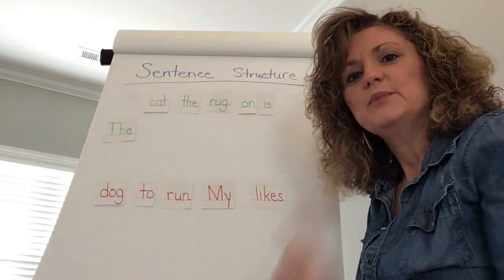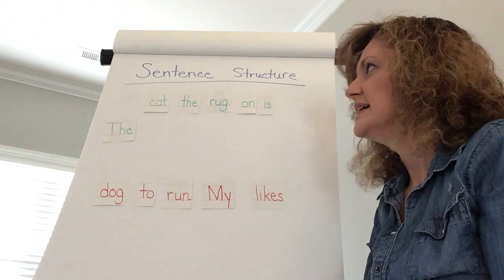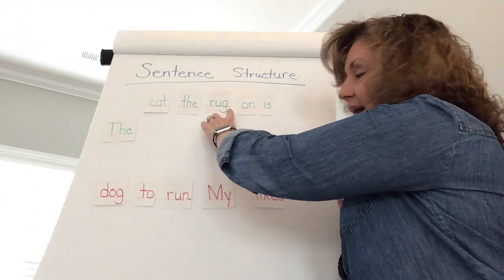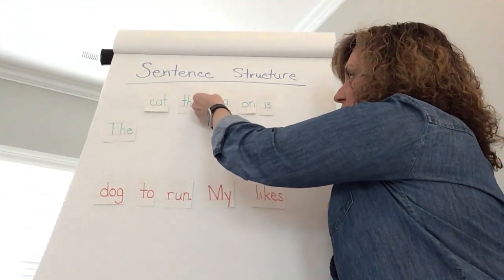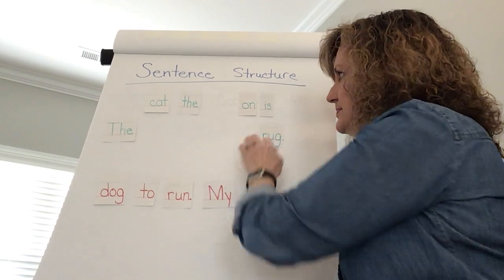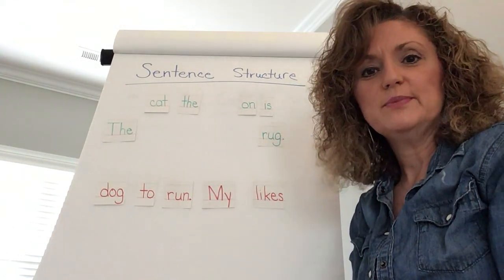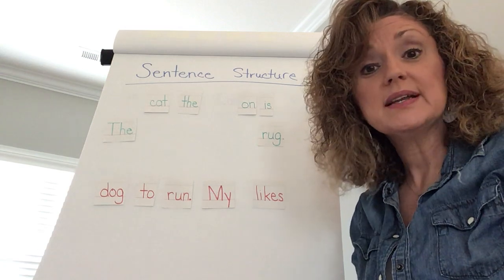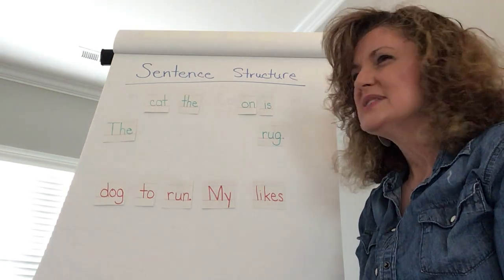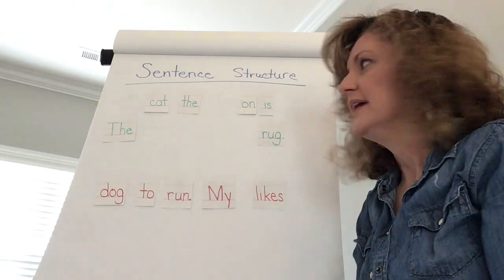I know my next rule is that it has to end in some kind of punctuation and I see that the word rug has a period after it. So I note that this is going to be the last word of my sentence. Some other things about a sentence is it has to have some kind of subject and the subject is a noun or a pronoun. So a noun is a person place or a thing.